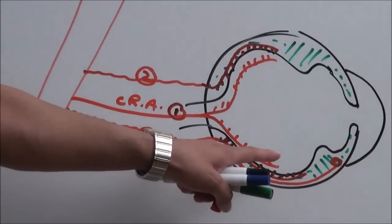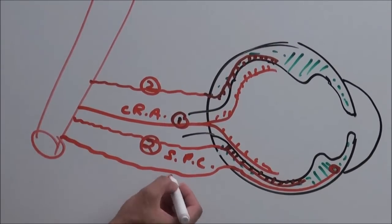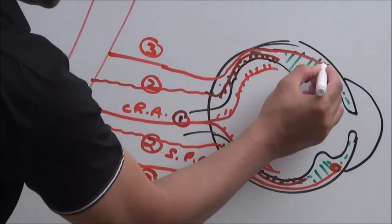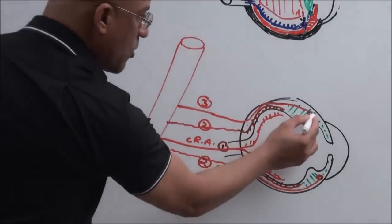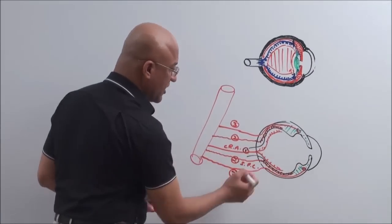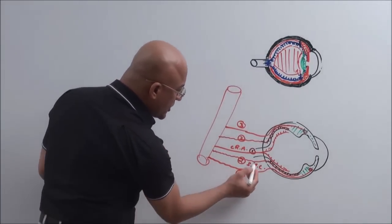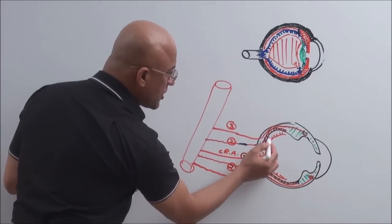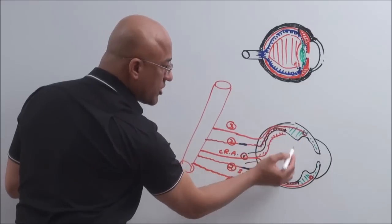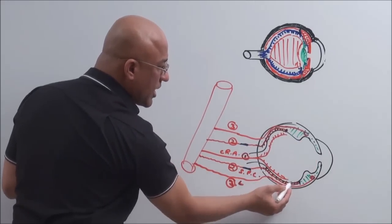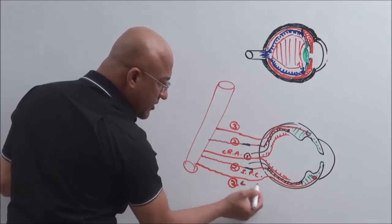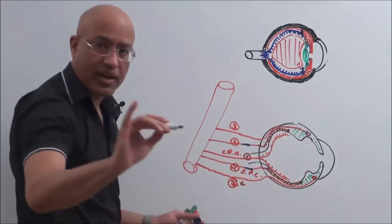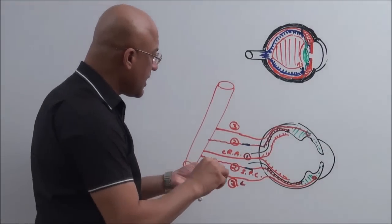The short posterior ciliary arteries mainly supply the choroid and do not supply the ciliary body or the iris. The long posterior ciliary artery, number three, moves forward and reaches up to the ciliary body. So the short posterior ciliary supplies the choroid, while the long posterior ciliary moves forward, reaching the ciliary body and even sending branches to the iris.